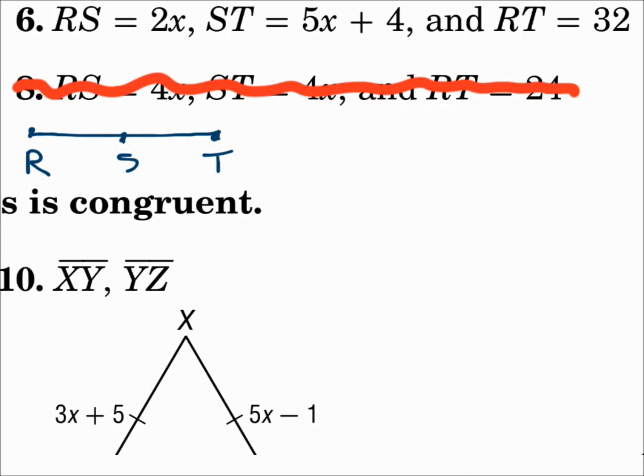Number 6. We have another situation where the parts add up to the whole thing. RS plus ST equals RT. The parts RS and ST add up to the whole thing, RT.